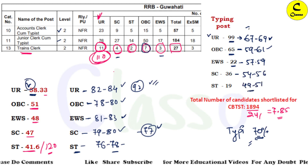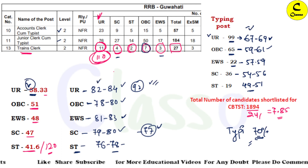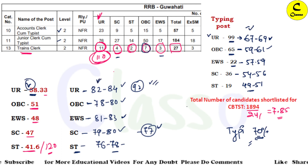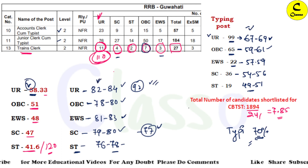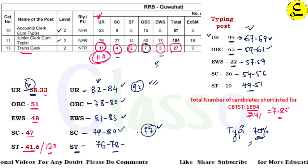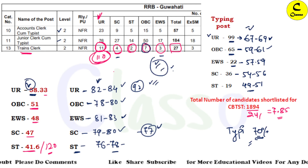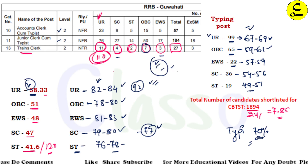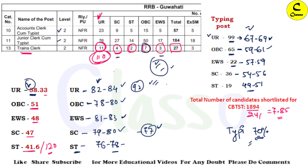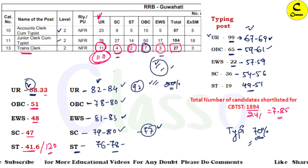This is the cut-off analysis for Guwahati zone — both typing and non-typing posts for RRB NTPC Level 2 — based on rank IQ data analysis, vacancy table, Level 6, Level 5, and Level 3 results, and graduation strength calculations.